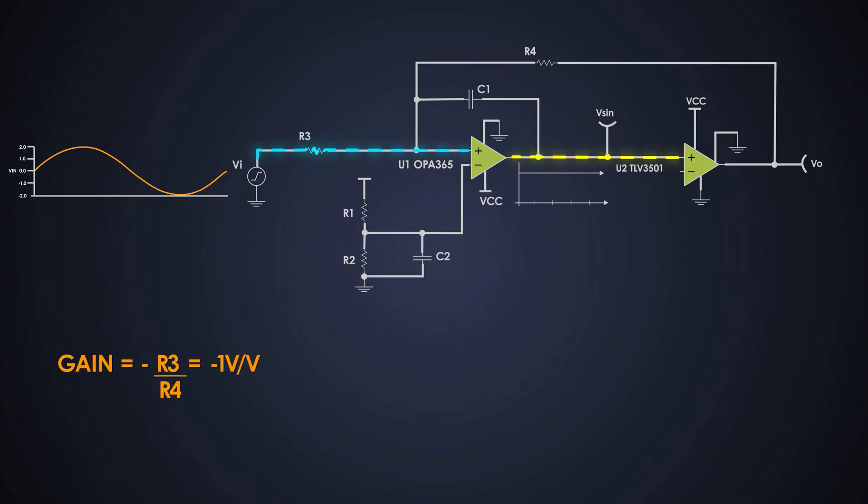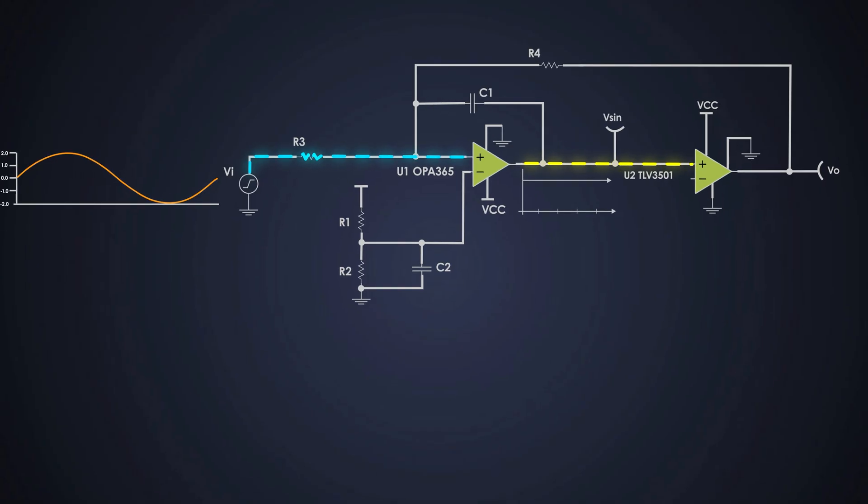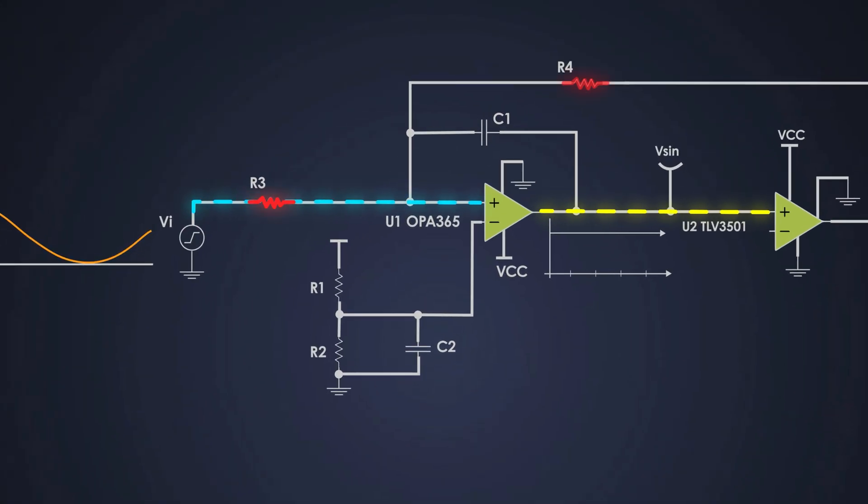This means, if we give plus 1 volt at the input, it gives us minus 1 volt at the output, and vice versa. We select the resistors R3 and R4 as 10 kilo ohms each. So the gain is equal to minus 1.